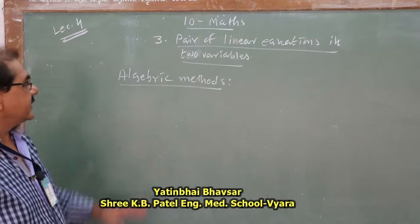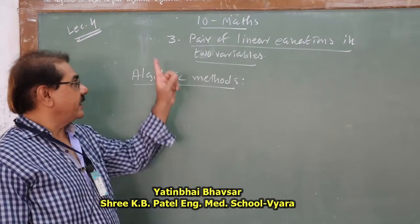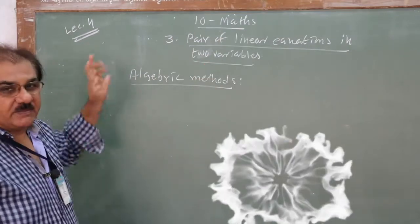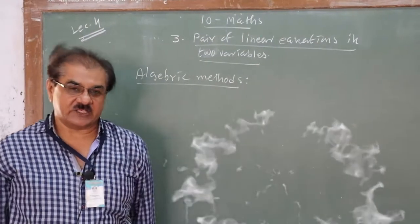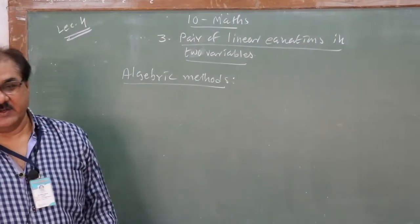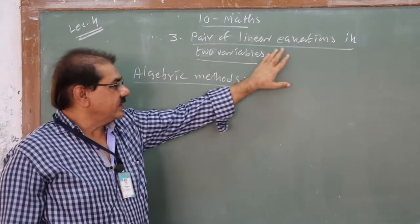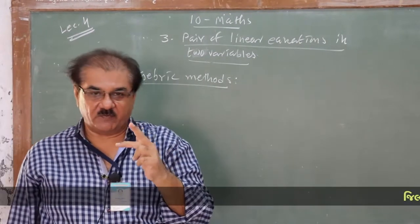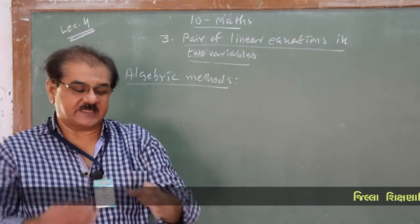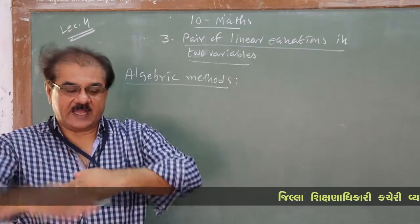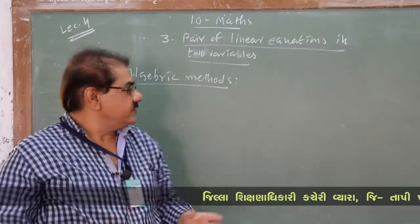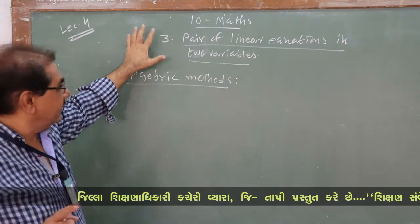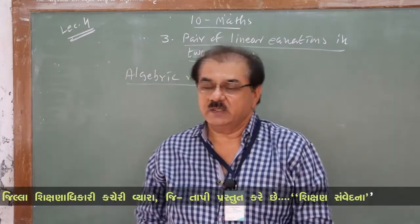Hello friends. This is Standard 10 Maths, Chapter 3: Pair of Linear Equations in 2 Variables — my lecture number 4. In the first three lectures, we studied what a Pair of Linear Equations in 2 Variables is. We drew two lines for two equations in the same plane; those lines can intersect, be parallel, or coincide. We then used the graphical method to solve the pair of equations.